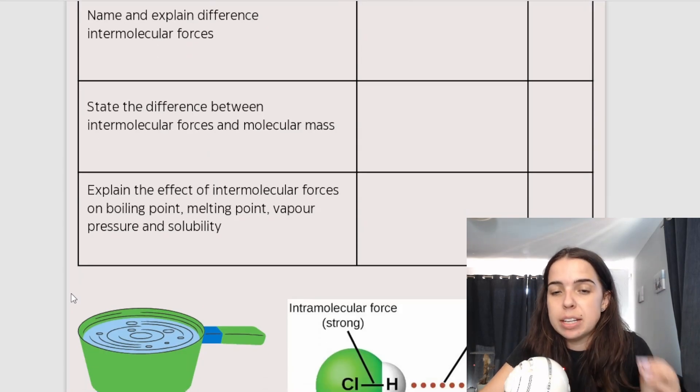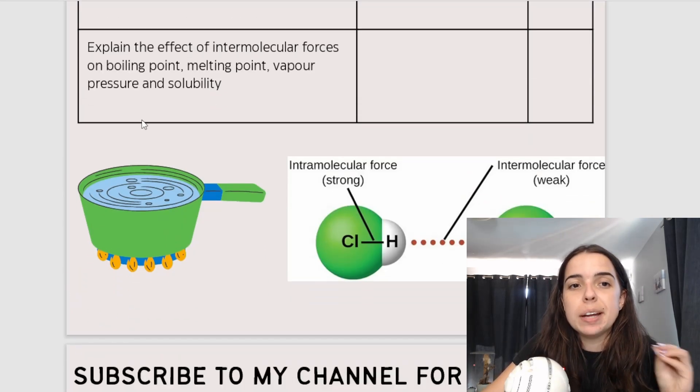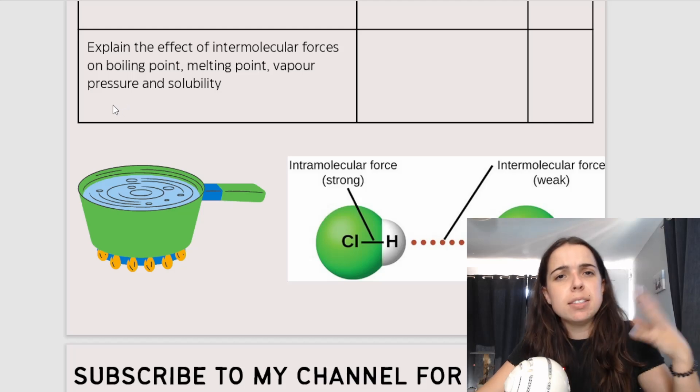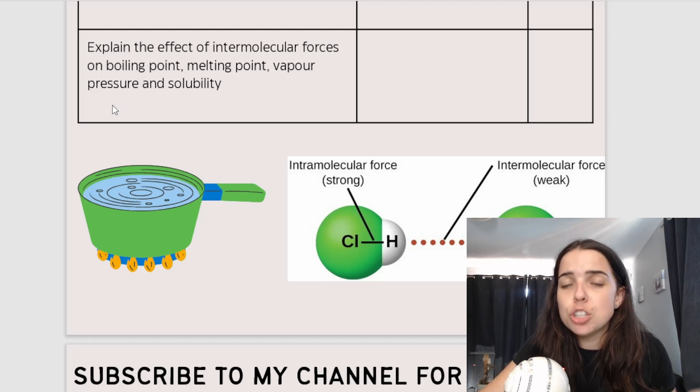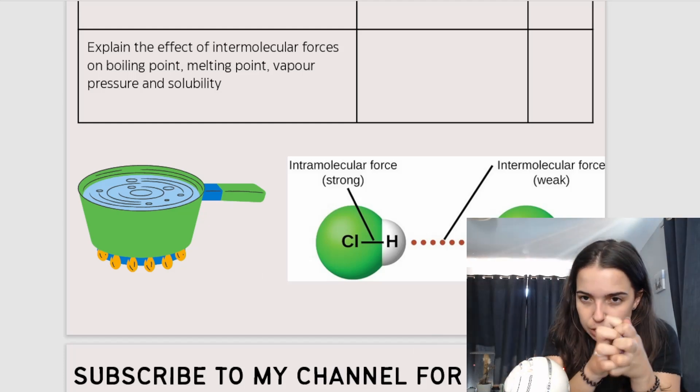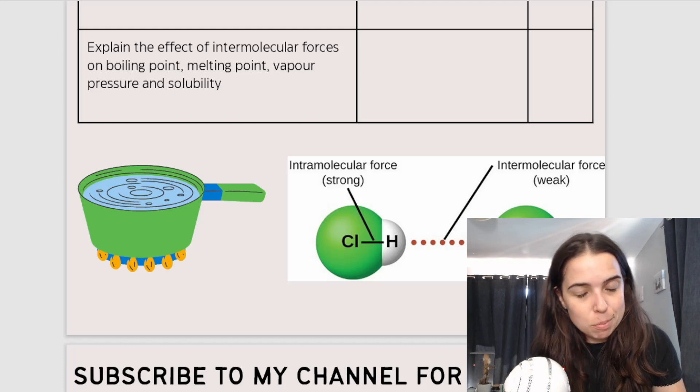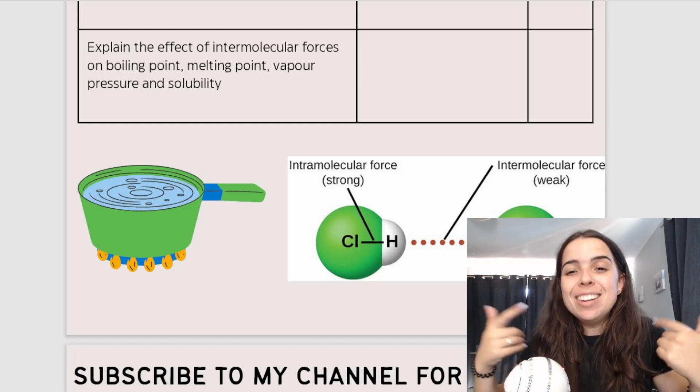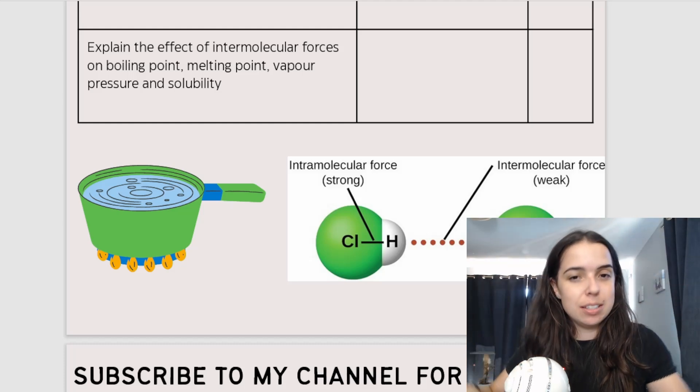And we basically speak about how these intermolecular forces affect things like boiling points, melting points, vapor pressure, solubility. So for example, you will learn that the stronger the intermolecular forces, the higher the boiling points because it needs more energy to overcome those intermolecular forces. That's something that we say a lot in this topic.